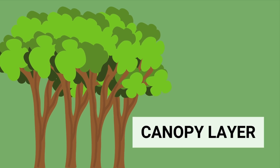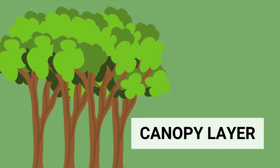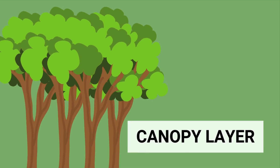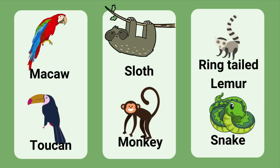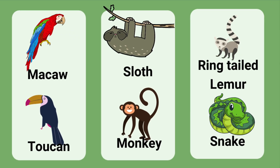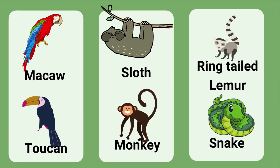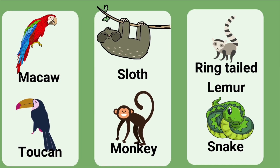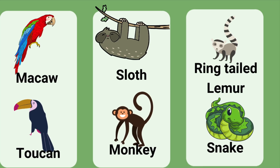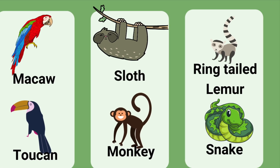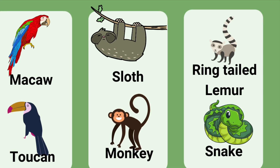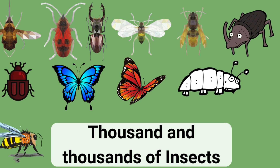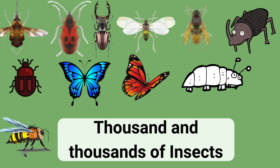Beneath the emergent layer is the canopy, a deep layer of vegetation that forms a roof over the two remaining layers. With so much food available, more animals live in the canopy than any other layer. Those animals include snakes, macaws, toucans, spider monkeys, sloths, tree frogs, and many more. Thousands and thousands of insects can also be found in the canopy.